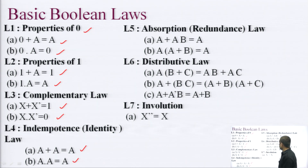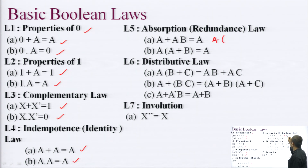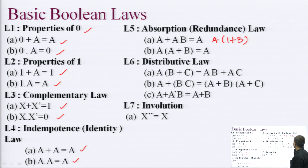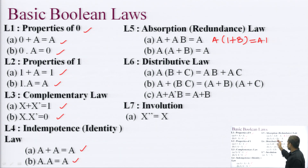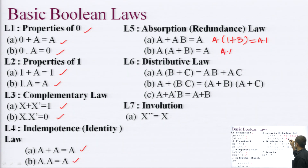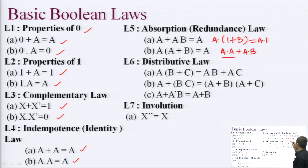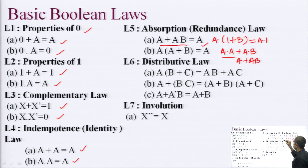The absorption law states that A plus AB equals A. Taking A common gives A into (1 plus B), and since 1 plus B equals 1 by the property of 1, this becomes A into 1 which equals A. Also, A into (A plus B) equals A — opening the brackets gives A into A plus A into B, and since A into A equals A, this becomes A plus AB, which is again equal to A.